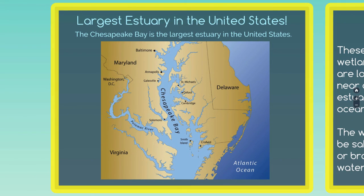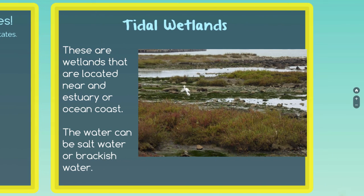The largest estuary in the United States is the Chesapeake Bay, which is very close to where we live — and if you've ever gone there, it's beautiful. Near an estuary we can also find tidal wetlands. Tidal wetlands are wetlands located near an estuary or ocean coast, so the order is: tidal wetland, estuary, ocean. The water in a tidal wetland can be either salt water or brackish water like an estuary.